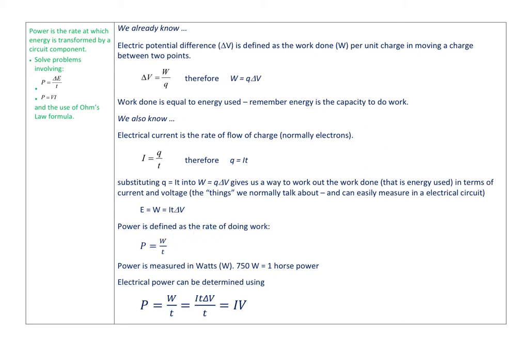Power is defined as the rate of doing work, so power is work over time. Power is measured in watts, symbol W. You'll often hear people talk about kilowatts as well, which is 1,000 watts. One horsepower is equal to 750 watts. Putting all that together, electrical power can be determined using P equals W over T. But we know work done is equal to I times T times delta V. The T's cancel, so we get this very simple relationship that power equals current times voltage.